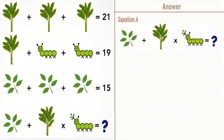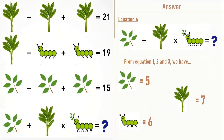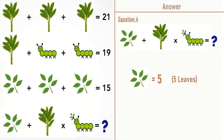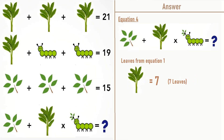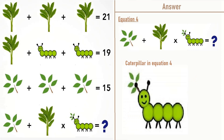Now on to the last equation, equation number 4. From equations 1, 2, and 3 we have: leaves equal to 5, caterpillar equal to 6, and leaves equal to 7. The leaves in equation 4 have 8 leaves, equal to 8. If you see the caterpillar in equation 4, it has leaves and 8 legs.